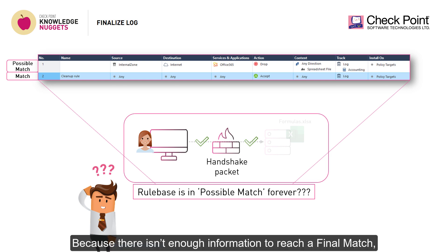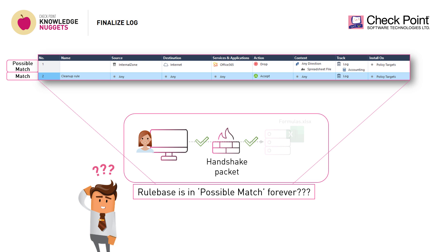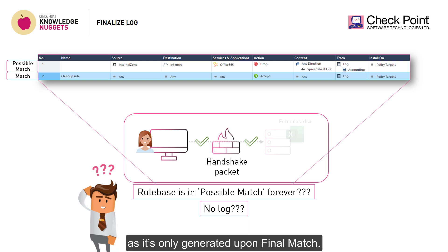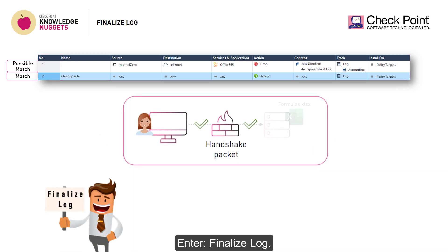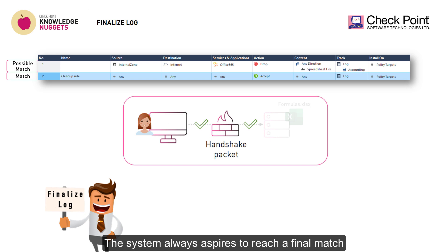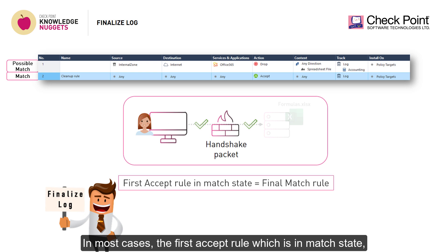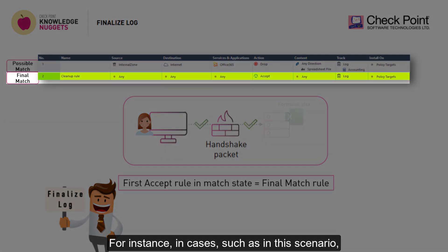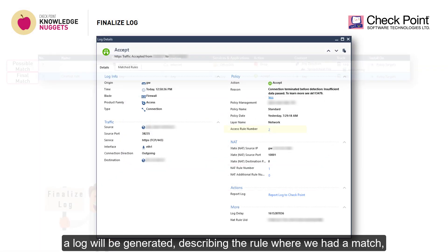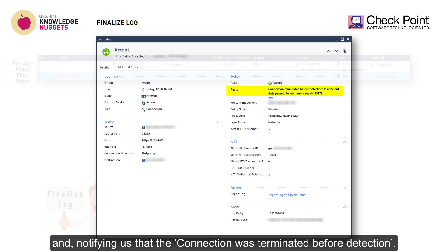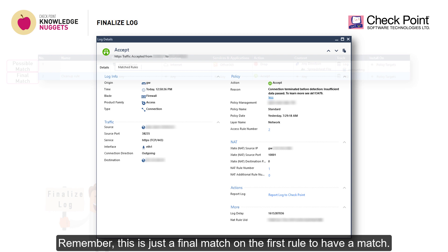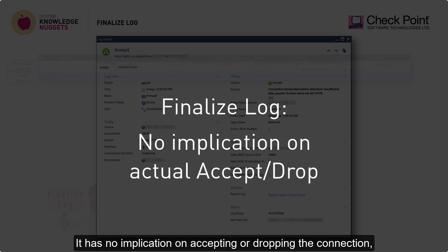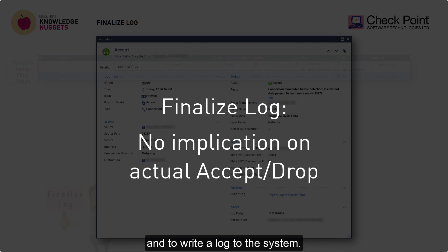Because there isn't enough information to reach a final match, the connection can neither be accepted nor dropped. This also means that no log will be generated, as it's only generated upon final match. Enter: finalize log. The system always aspires to reach a final match, even though it doesn't have the full picture. In most cases, the first accept rule which is in a matched state will become the final match rule — for instance, in cases where the handshake packets are accepted and there is a cleanup accept rule in place. In such cases, a log will be generated describing the rule where we had a match, and notifying us that the connection was terminated before detection. Remember, this is just a final match on the first rule to have a match. It has no implication on accepting or dropping the connection, because the connection had already been aborted in the first place. This mechanism is only in place to gain closure and to write a log to the system.